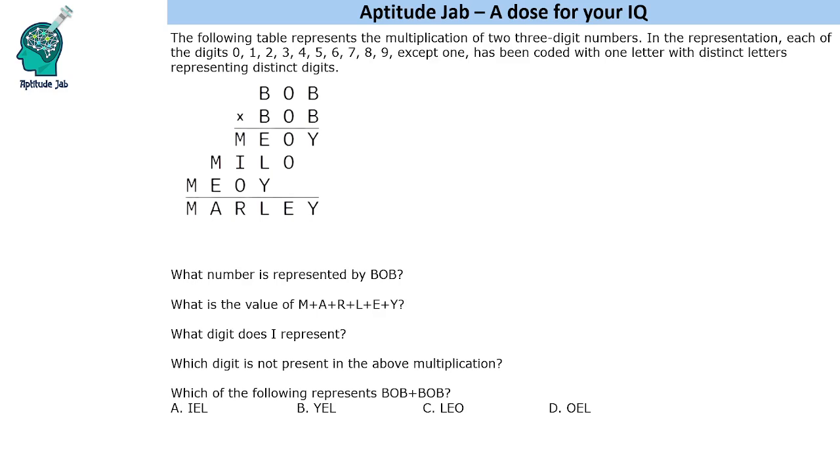It says that we are given a multiplication of two three-digit numbers and in this each of the digits is represented by one distinct letter and one of the digits is missing from it. So if you see the distinct digits you will find nine digits out of ten. Now we need to decode this multiplication and find out what does BOB into BOB, that is MARLEY, mean.